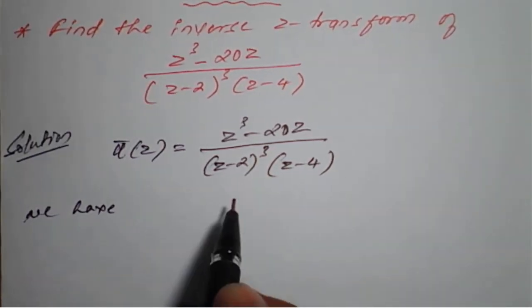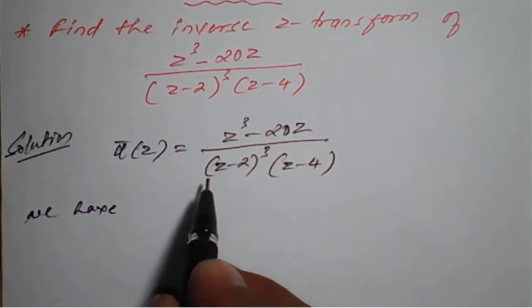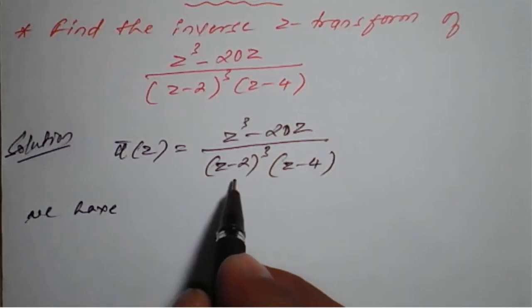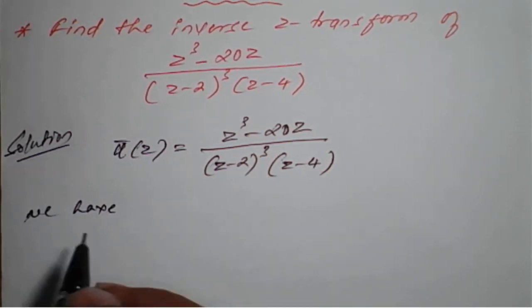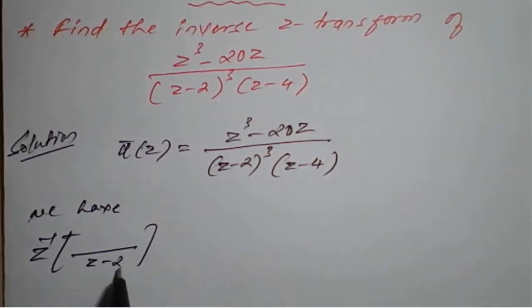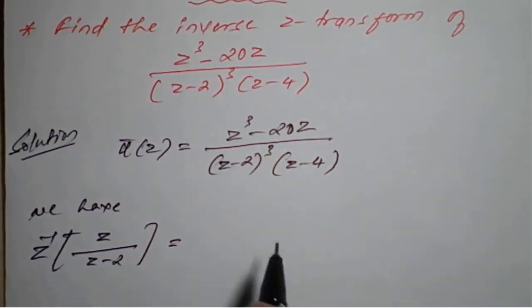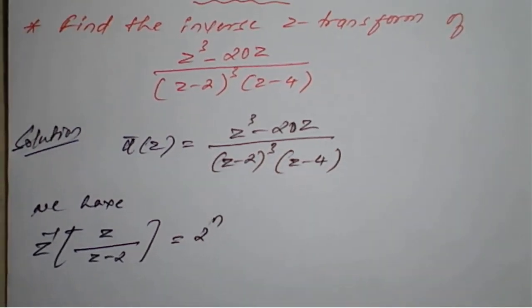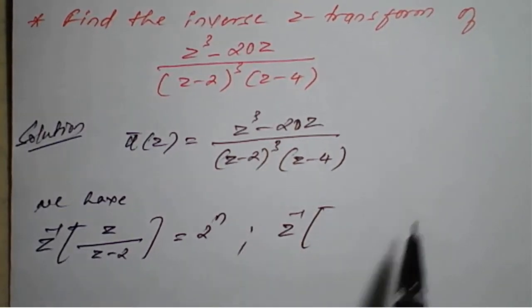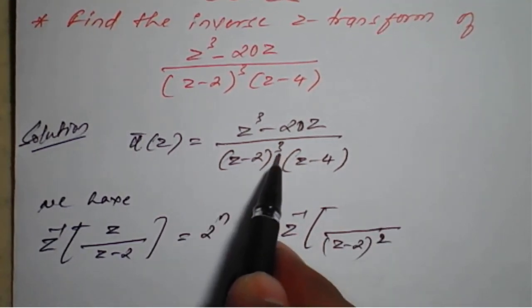By seeing the denominators, we consider the first bracket (Z-2)³ broken into: (Z-2) once, (Z-2)², and (Z-2)³. So Z-inverse of Z/(Z-2), taking Z-2 one time, always has numerator Z, giving result 2ⁿ. Next, Z-inverse of Z/(Z-2)² — we take (Z-2)² in increasing order up to 3.